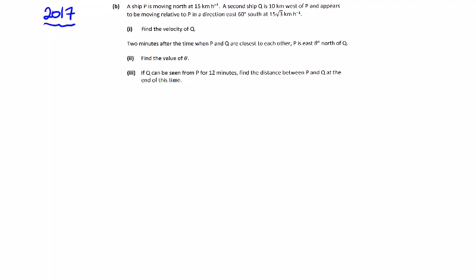The 2017 relative velocity question, part B. The ship P is moving north at 15 kilometers per hour, so we have the velocity of P north at 15 is 0i plus 15 in the j direction.